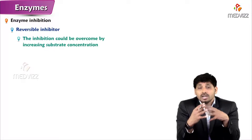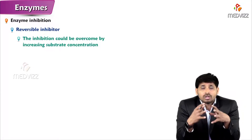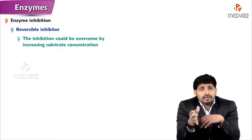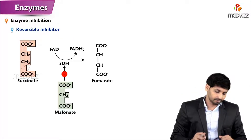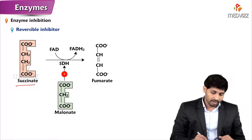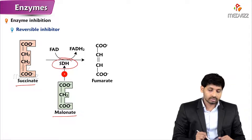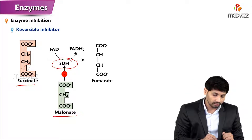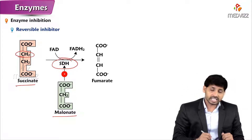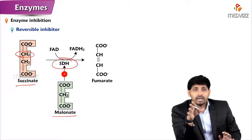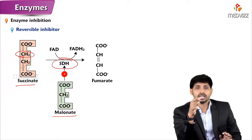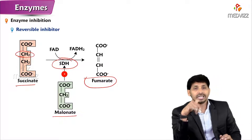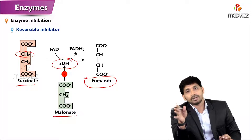This inhibition can be overcome by increasing substrate concentration. With more substrate available, the enzyme prefers to bind the substrate over the inhibitor. For example, succinate dehydrogenase acts on succinate to produce fumarate. Malonate is structurally similar to succinate — differing by only one CH₂ group — so the enzyme cannot distinguish them. When malonate is present, it binds succinate dehydrogenase and blocks fumarate formation. Increasing succinate concentration displaces malonate, restoring fumarate production.